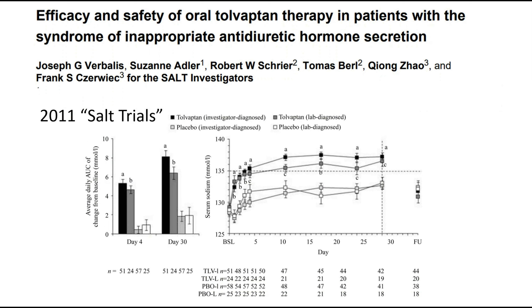The original paper promoting tolvaptan comes from the European Journal of Endocrinology in 2011 as part of the SALT trials. The higher curves represent the increases in plasma sodium associated with tolvaptan — it appears to be very effective therapy. However, one in 20 patients in this trial had an overshoot of their sodium target — they over-corrected.